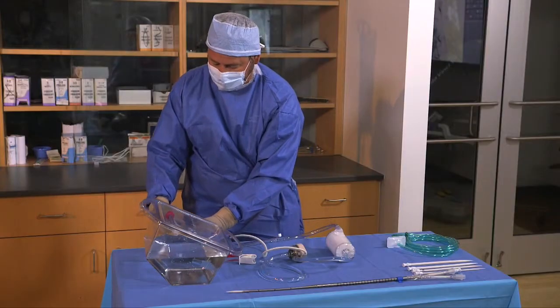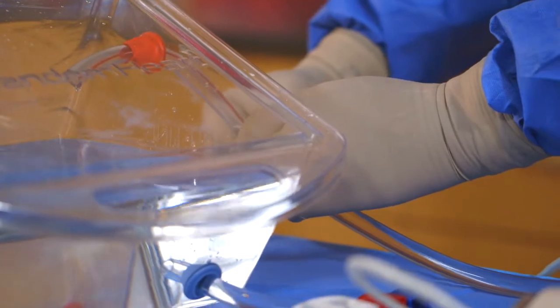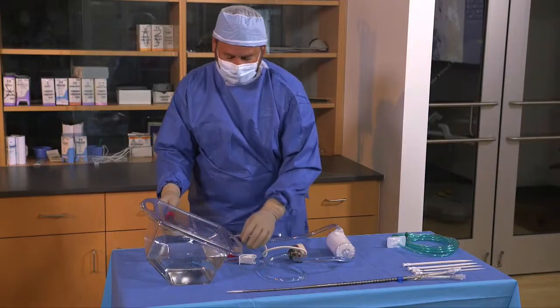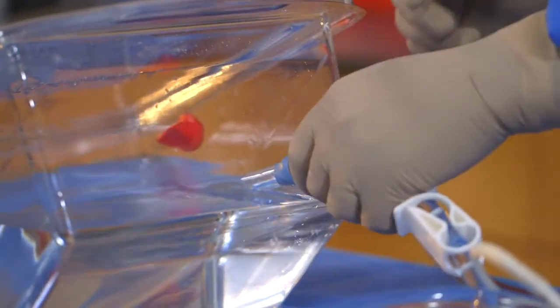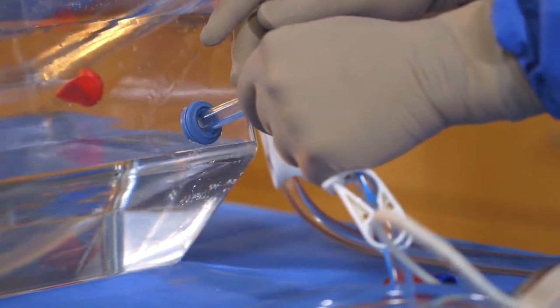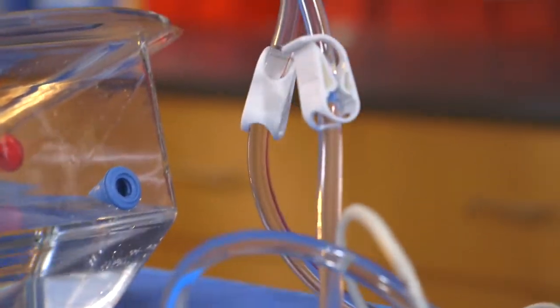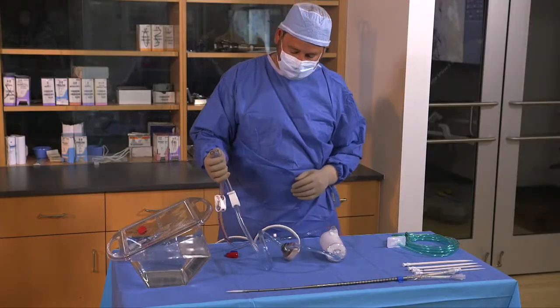The sterile operator clamps the inflow and outflow tubing below the fluid line. The sterile operator makes a final inspection of the pump, oxygenator and tubing to verify that all air has been vacated.